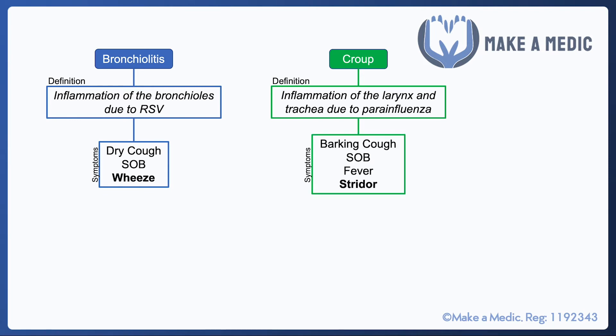Croup shares some common features — shortness of breath, fever, and a cough — however the croup cough is classically described as a barking cough, something worth looking up on YouTube. It's described as a seal-like barking cough, and once you've heard it you'll recognize it straight away. Most importantly, croup causes stridor rather than a wheeze — the difference between these two terms will be discussed in a moment.